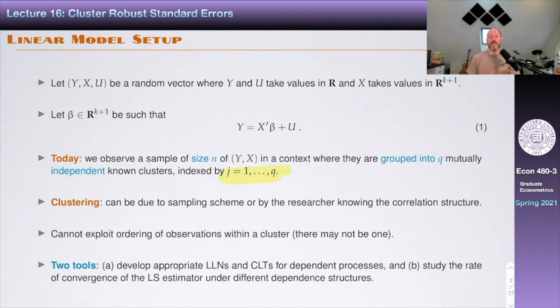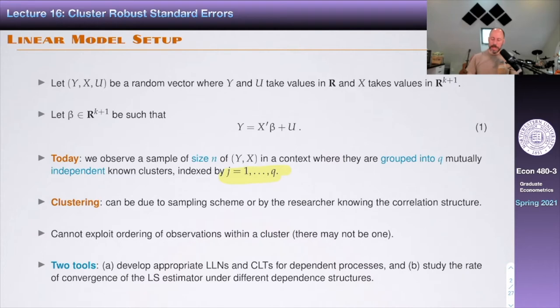To do limit theorems and inference in statistics, you need independence at some point. In IID data, that's by assumption. In time series, that's via mixing conditions — observations far apart are essentially independent. In the cluster structure, you assume clusters are independent, and this structure is known to us.